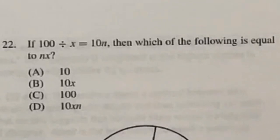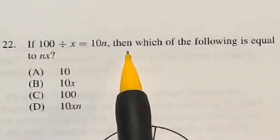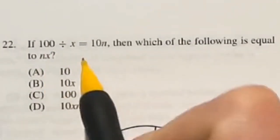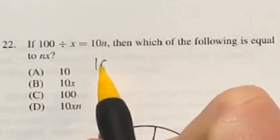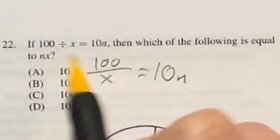So 22 is just some simple algebra here. It says 100 divided by x is equal to 10n. Then which of the following is equal to n times x? So I'm going to go ahead and rewrite this. We got 100 divided by x equals 10n.